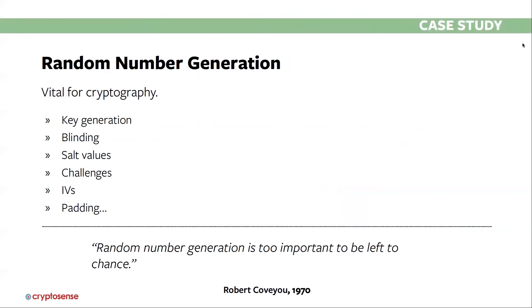A second major category of cryptographic failure is random number generation, which is really vital to cryptography staying secure. We think about random number generation mainly for key generation — a new key must be generated securely so nobody can guess its value. But we also use random numbers in many other places: blinding against side-channel attacks, salt values for storing passwords, challenge-response protocols, and more. There's a famous paper titled 'Random Number Generation is Too Important to be Left to Chance' — a great name — dating back to 1970 by Robert Covey, a physicist from the Manhattan Project and civil rights activist.